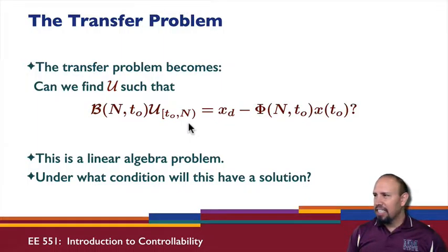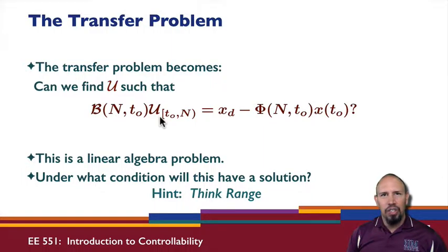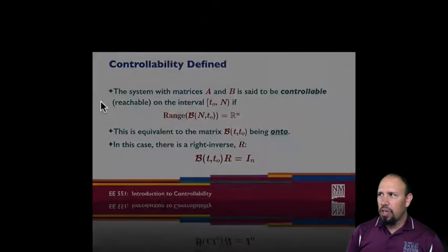And a hint is, think range. So we have, so this is basically a matrix times our unknown. So when will this have an exact solution? It'll have an exact solution whenever this vector is in the range of this matrix. So that's the question.